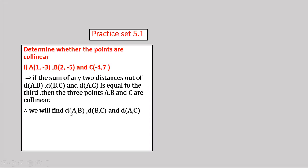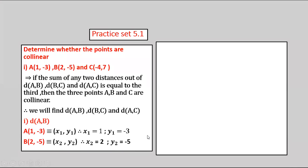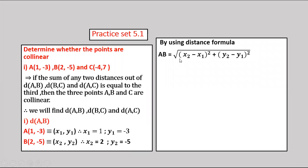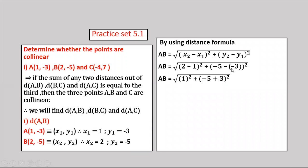We will find distances AB, BC, and AC. To find AB: coordinate of A(1, −3) as x1, y1, so x1 = 1, y1 = −3. Coordinate of B(2, −5) as x2, y2, so x2 = 2, y2 = −5. By using the distance formula, AB = √[(2−1)² + (−5−(−3))²] = √[1 + (−2)²] = √[1 + 4] = √5. We get equation number 1.